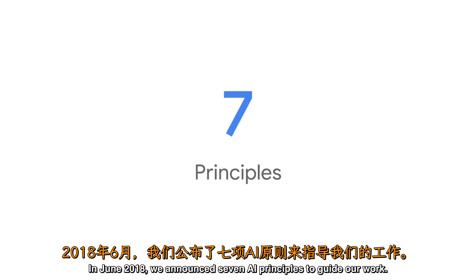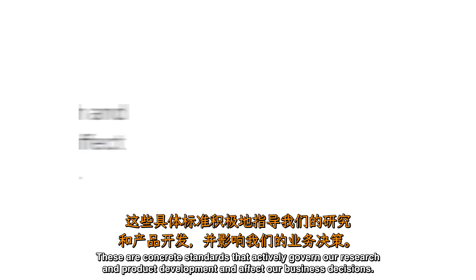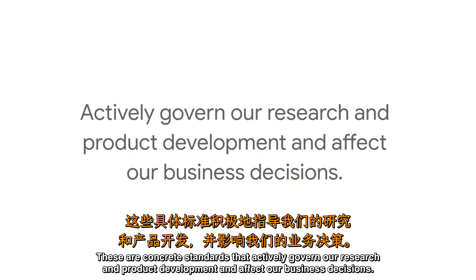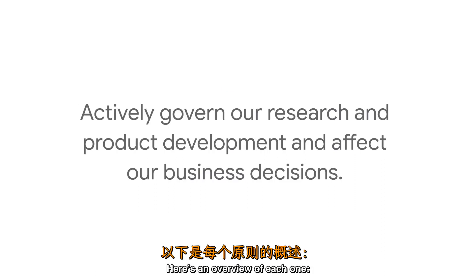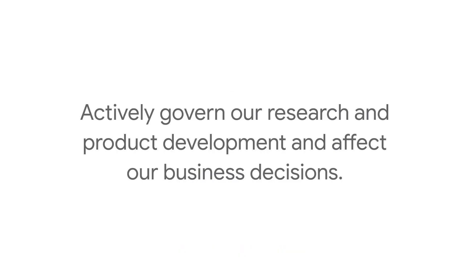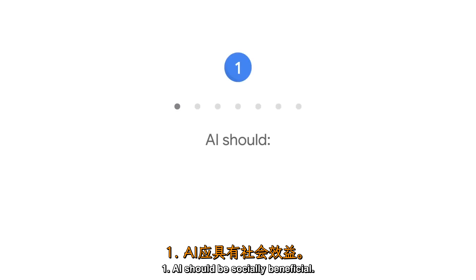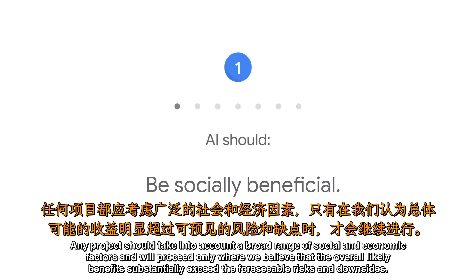In June 2018, we announced seven AI principles to guide our work. These are concrete standards that actively govern our research and product development and affect our business decisions. Here's an overview of each one. Principle 1: AI should be socially beneficial. Any project should take into account a broad range of social and economic factors and will proceed only where we believe that the overall likely benefits substantially exceed the foreseeable risks and downsides.